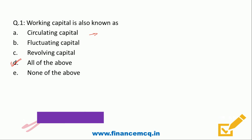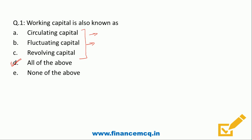Working capital is also circulating capital — it keeps on circulating or rotating, like we collect from debtors and pay to creditors. It keeps on fluctuating; sometimes we have more, sometimes less. So all these are known as working capital. The correct answer is option D.